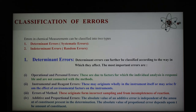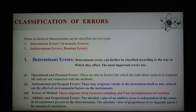Personal error may arise from the constitutional inability of an individual to make certain observations accurately. For example, some persons are unable to judge color changes sharply in visual titration, which may result in a slight overstepping of the end point. During titration, different analysts may read different values — some writing 10.5, some 10, some 10.1 — so error occurs during judgment of color change.